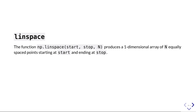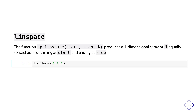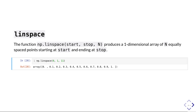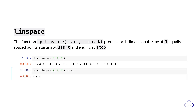Let's look at another useful NumPy function: linspace. If you want n equally spaced numbers beginning with a start value and ending with a stop value, np.linspace(start, stop, n) produces a one-dimensional array of those n points. For example, np.linspace(0, 1, 11) gives 11 equally spaced points from 0 to 1: 0, 0.1, 0.2, ..., 0.9, 1. The shape is a tuple of size 1 containing 11.